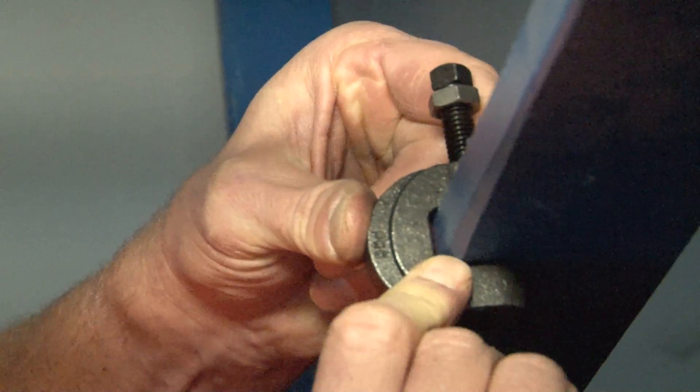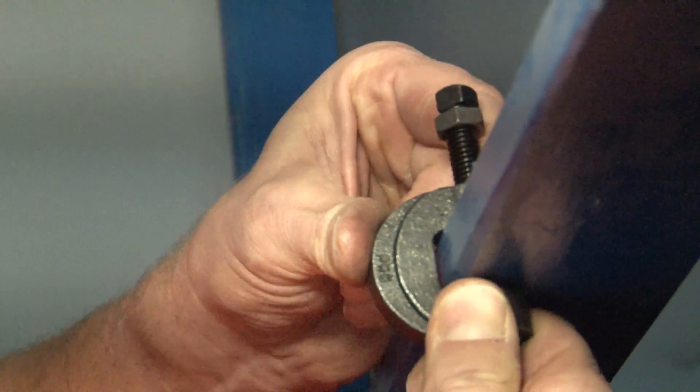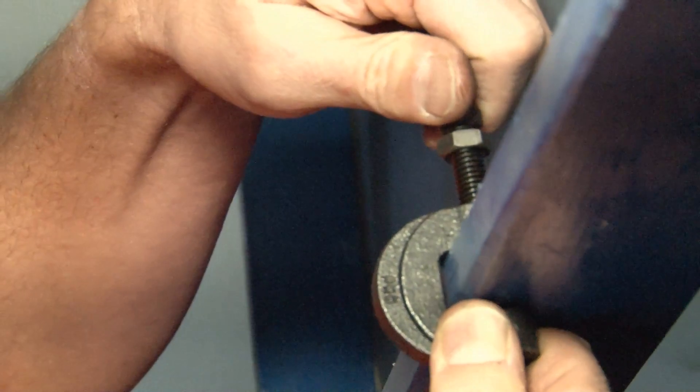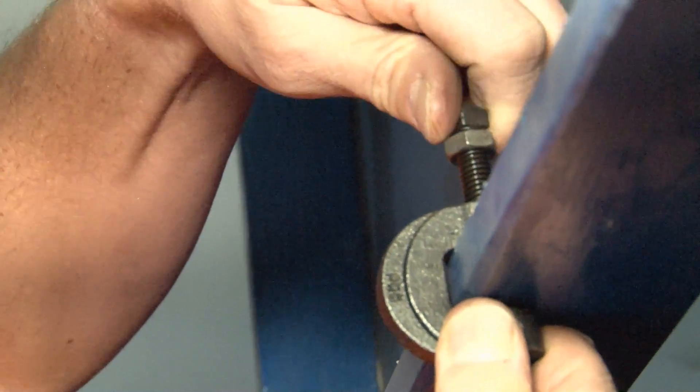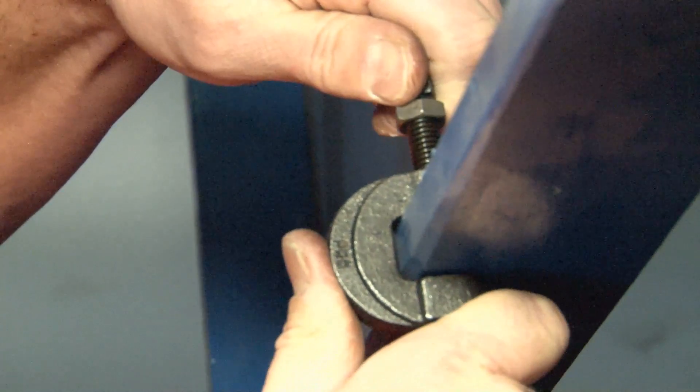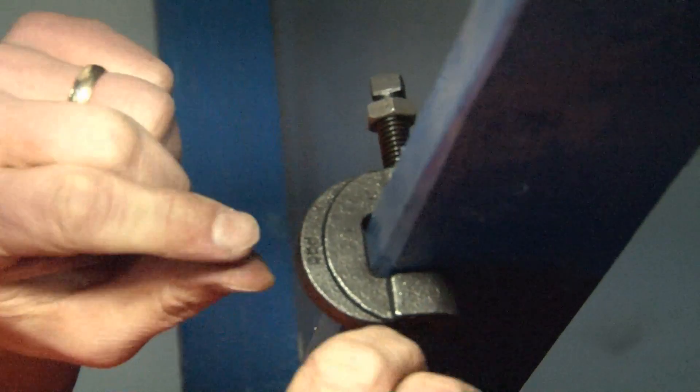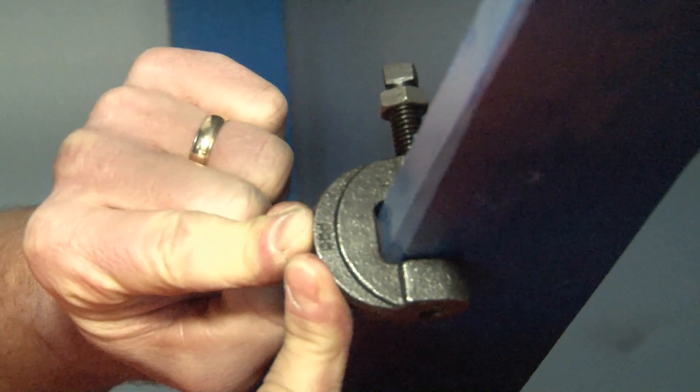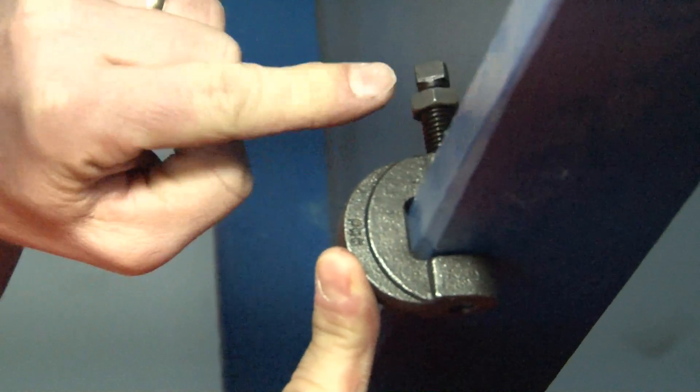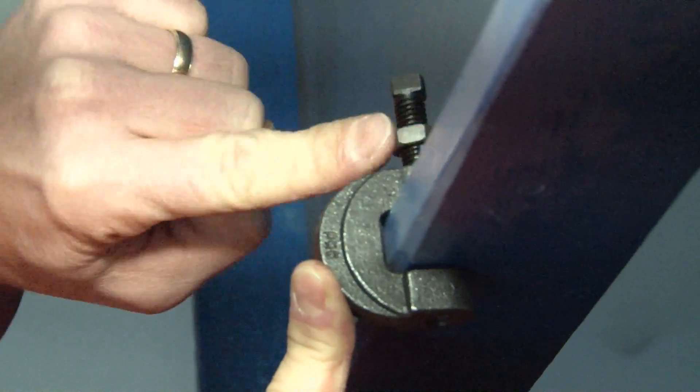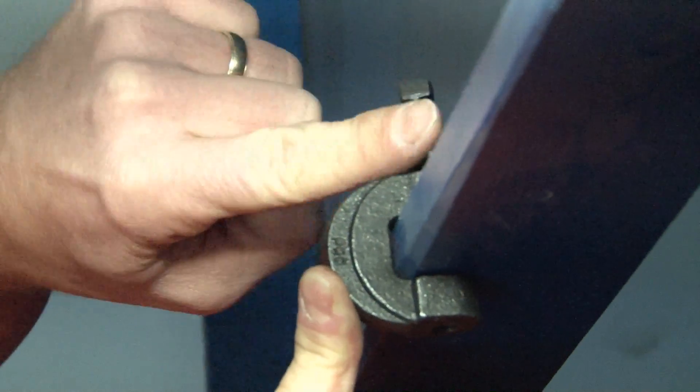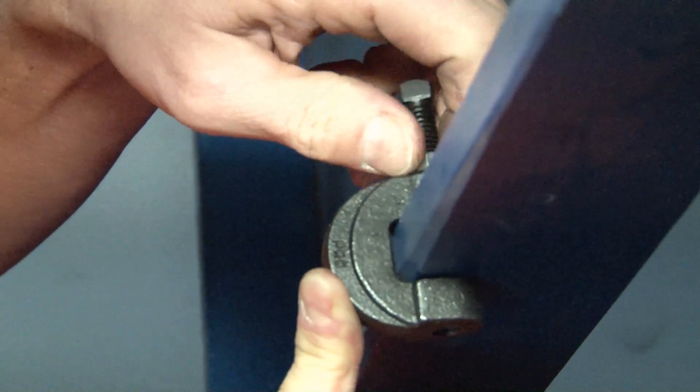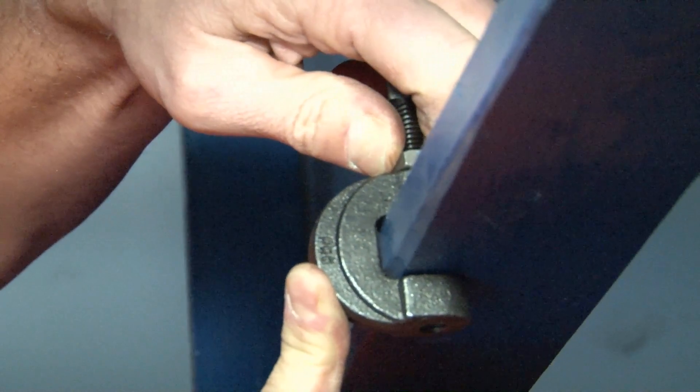Once it's secured where you want it, you simply take a pair of channel locks or pliers and tighten down the top set screw, locking it on the beam. To further increase the security and staying power of this clamp, take the jam nut and run it all the way down after the bolt is secure and tighten it against the top of the clamp.